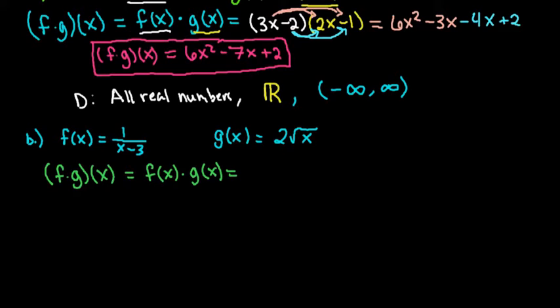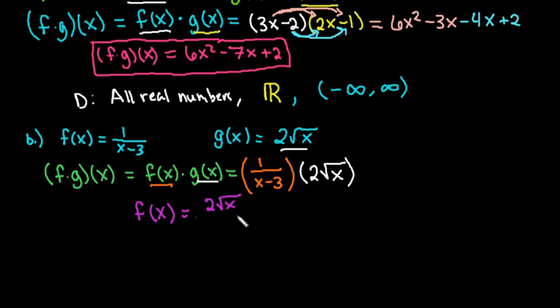Which equals my f of x equation times my g of x equation. So we would just take and plug in. So our f of x equation is 1 over x minus 3. And then we would take and multiply that by our g of x equation. So I would multiply that by 2 square root of x. Okay, so my final product on this one would just be f of x equals 2 radical x over x minus 3.